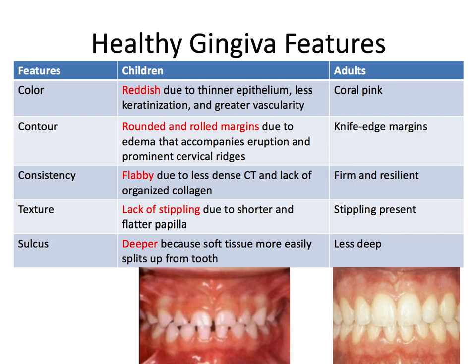In terms of consistency, the gingiva of a child tends to be flabbier due to less dense connective tissue and a lack of organized collagen. Whereas in adults, the gingiva is firm and resilient. And again, these are all characteristics of healthy, normal gingiva. In terms of texture, children have a lack of stippling due to shorter and flatter papilla. In adults, we have that stippling.